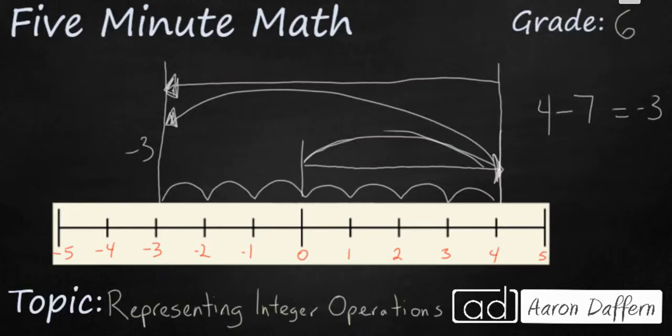But another way to write this would be 4 plus negative 7. Then you are going to get to negative 3. Now this is what is confusing here.